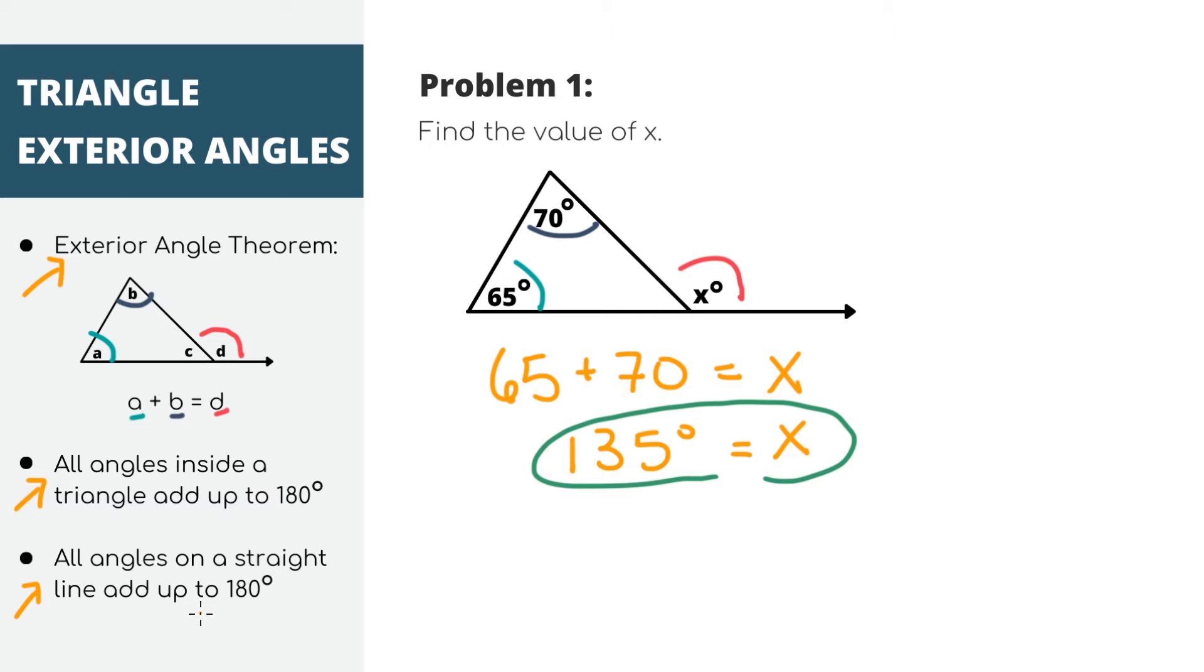So, another way of thinking about this same problem if you can't quite remember the exterior angle theorem is that all of the angles inside of a triangle add up to 180 degrees. Alright, so this angle must be 45 degrees because 65 plus 70 plus 45 equals 180. Then since x is on the same straight line, that means these two angles add up to 180. So x equals 135. That was just another way of doing the same problem and now you know why the theorem works.